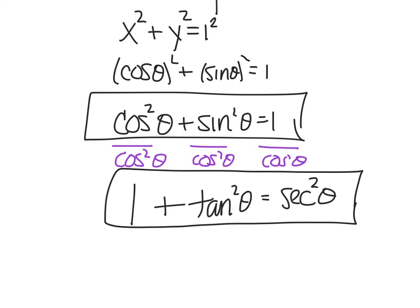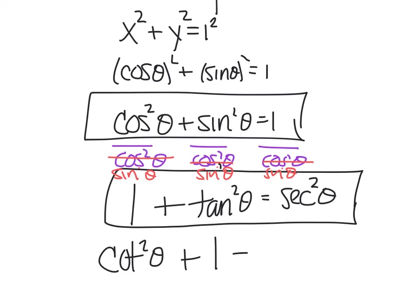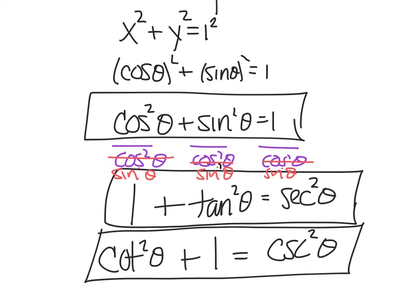To get the other identity, instead of dividing by cosine squared, divide by sine squared. Cosine over sine is cotangent squared, sine squared over sine squared is 1, and 1 over sine is cosecant, so that's cosecant squared. The result is cotangent squared theta plus 1 equals cosecant squared theta. You should have the first one memorized and be able to derive these other two.